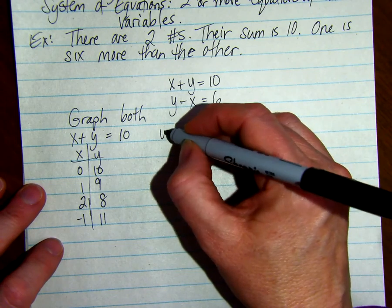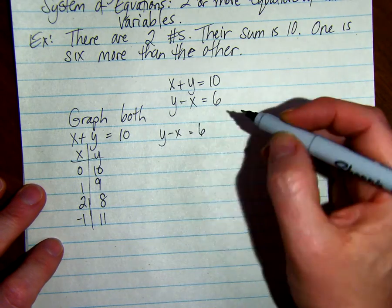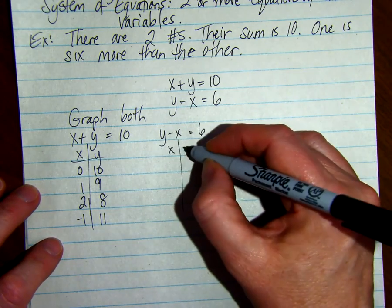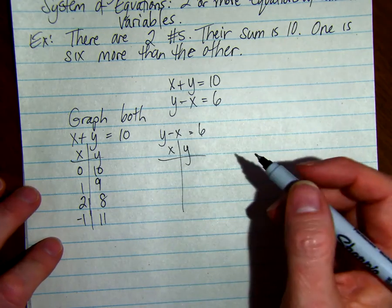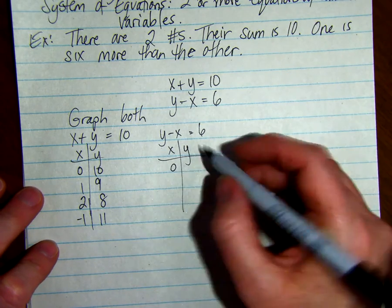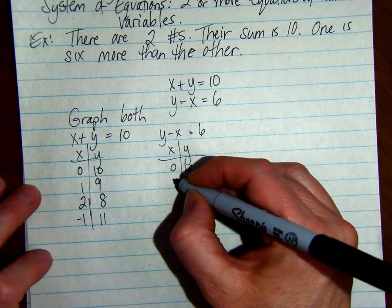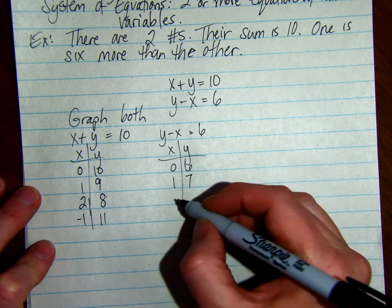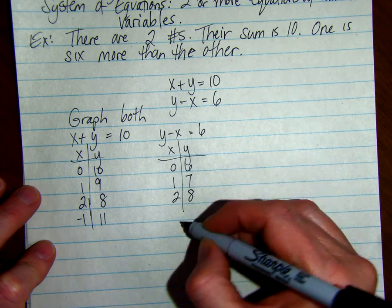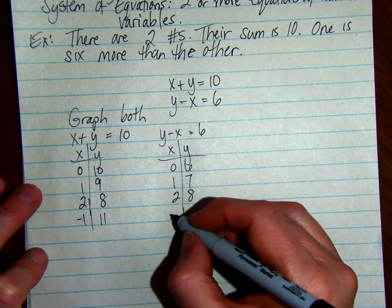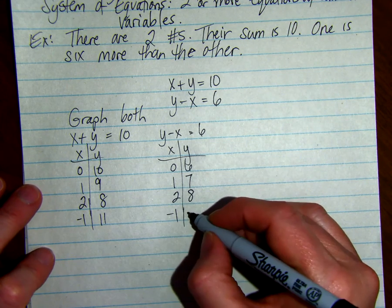And then if we have y minus x equals six, we're going to take x and y. If x is zero, y is going to be six. If x is one, y has to be seven. Two, y has to be eight. If x is negative one, y has to be five.